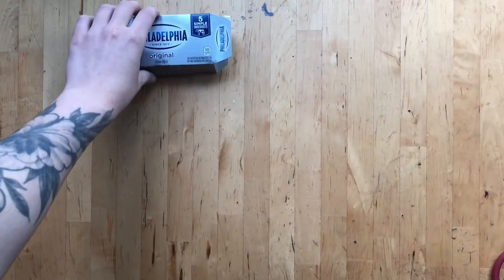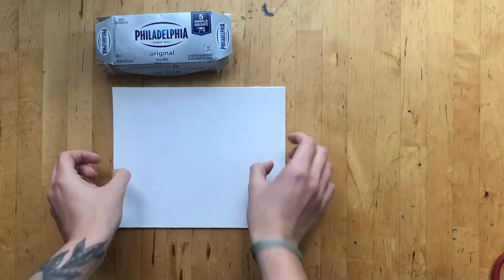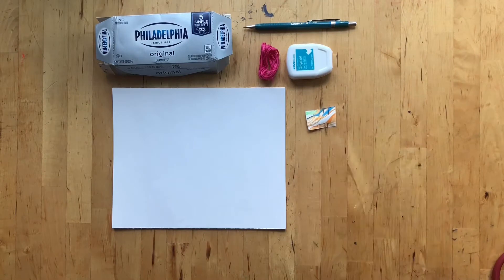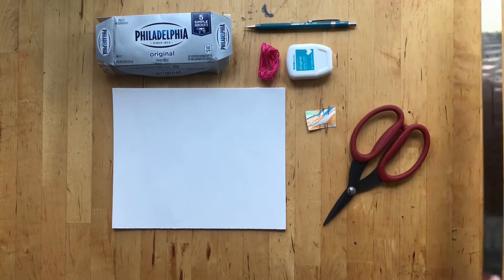To make this book, you'll need a cardboard food box for the cover, paper for the inside pages, a pencil, thread or floss, a needle, scissors, and a ruler.